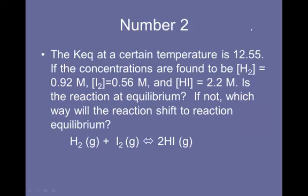Question number 2. The KEQ at a certain temperature is 12.55. The concentrations are found to be as listed. Is the reaction at equilibrium? If not, which way will the reaction shift to reach equilibrium? You'll notice this is the same exact equation we had before. So KEQ is HI squared over H2 times I2. This time they tell you the KEQ is 12.55. What we're trying to do is put our information into the question and see if we get 12.55.